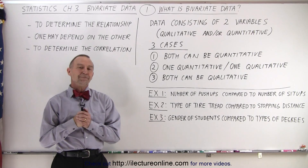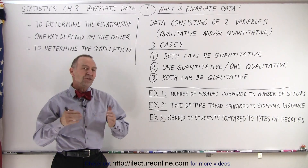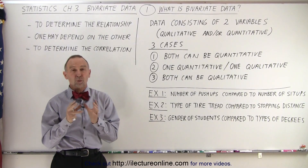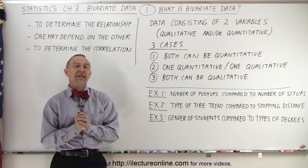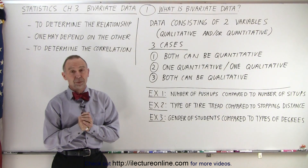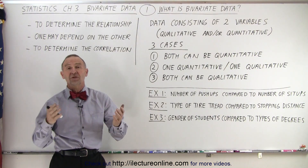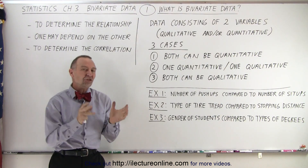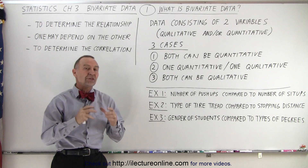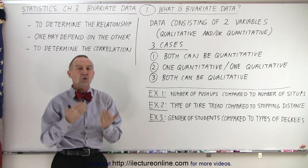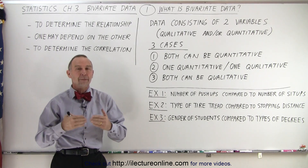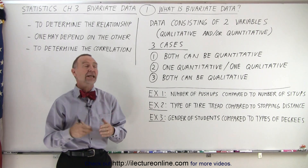Welcome to ElectronLine. In the previous chapter we dealt with just one type of data, for example, the prices of houses. But here in this chapter we're going to deal with two kinds of data, which means bivariate data.